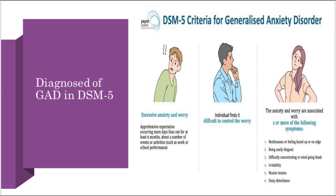The DSM-5 symptoms include: the first one is restlessness, feeling keyed up or on edge; being easily fatigued; difficulty concentrating and mind going blank; irritability; muscle tension; and the last one is sleep disturbance. You check these criteria to determine if it is GAD or not.